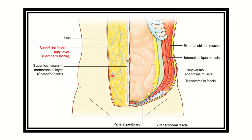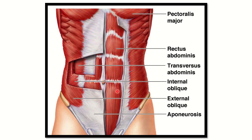Looking at the layers of the abdomen: first is skin, then superficial fascia. In the answer options, skin and superficial fascia are not listed, so we move to the third layer which is the external oblique muscle, then internal oblique, then transversus abdominis, then fascia.